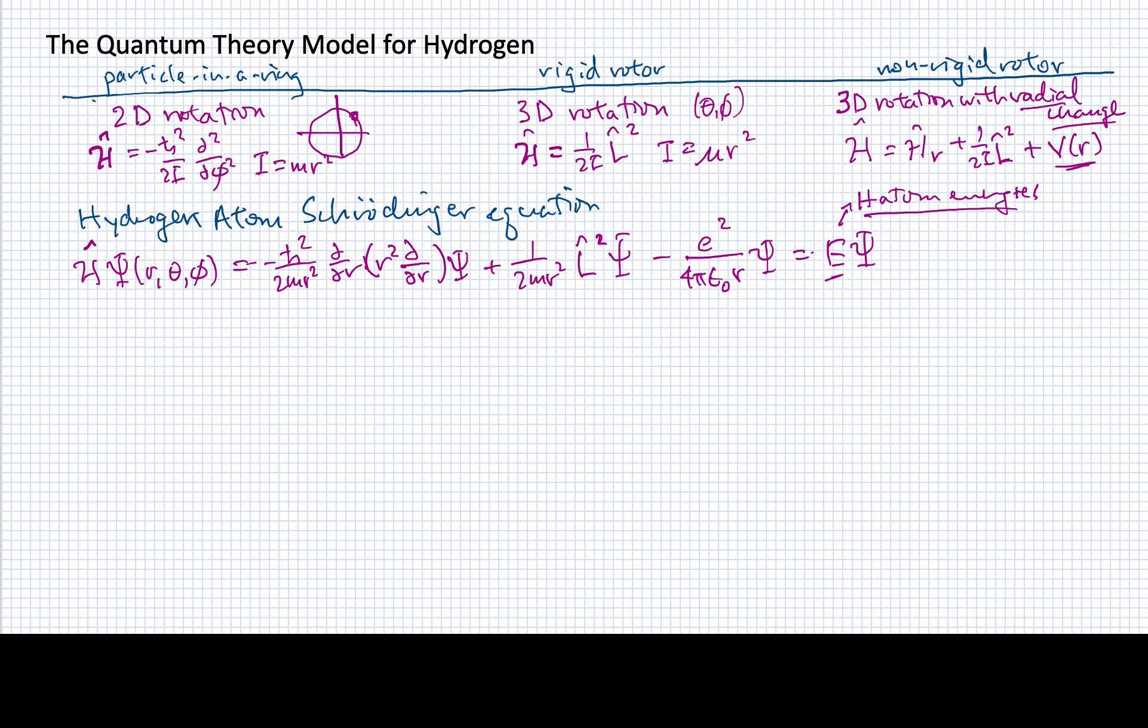We're going to invoke separation of variables for this differential equation. To do that, we're going to write our total wave function as the product of two parts: a part due to radial changes, and a part that is a function of the angles.